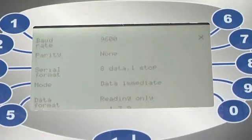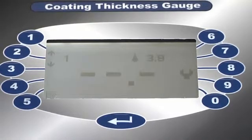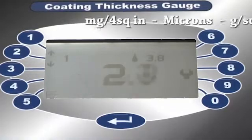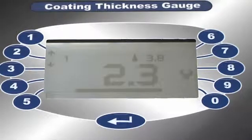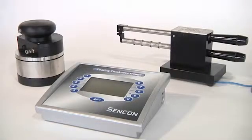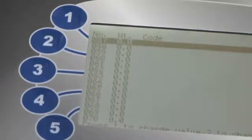The gauge will display measurements in the same format as the calibration panel, such as milligrams per four square inch, microns or grams per square metre. Up to 120 coating calibrations can be stored in the gauge.